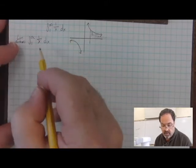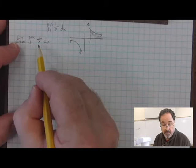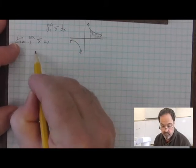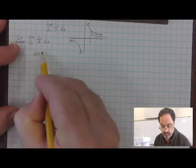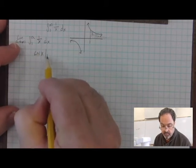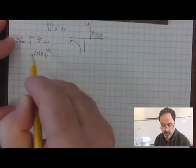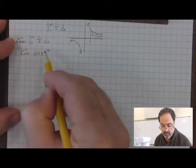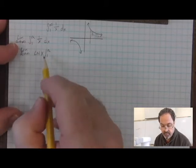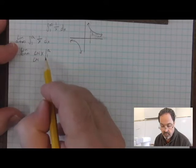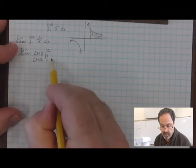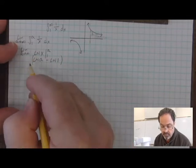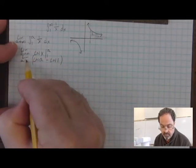Continuing to show our work, we have the integral from 1 to a of 1 over x with respect to x. Applying the fundamental theorem of calculus, I'm going to take the antiderivative of 1 over x, which is the natural log of x, and apply the bounds from 1 to a. We also must remember that we're taking the limit as a goes to infinity.